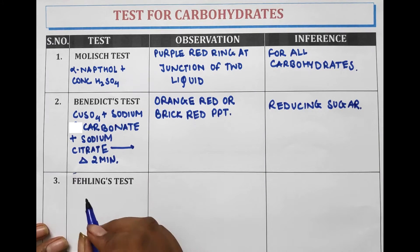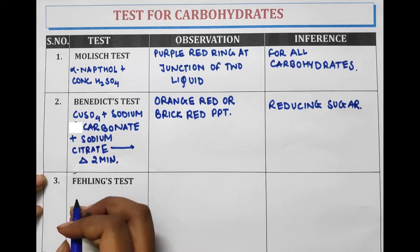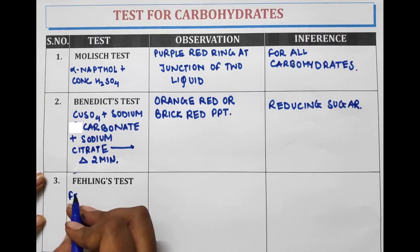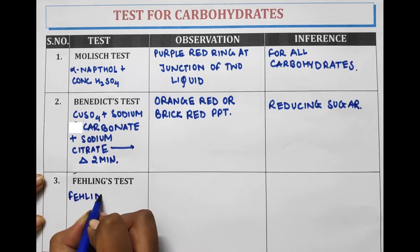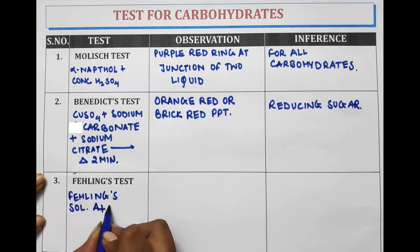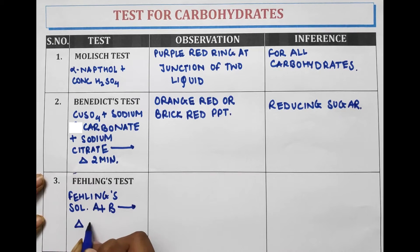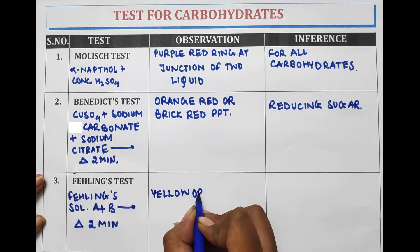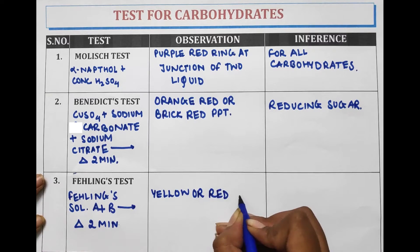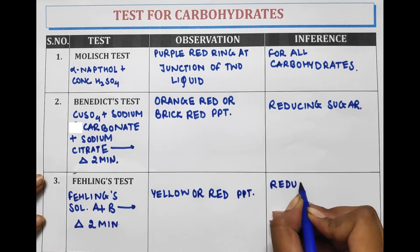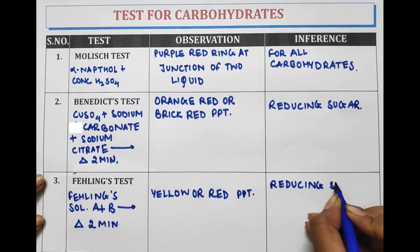The next test is the Fehling's test. Fehling's reagent A plus Fehling's reagent B is boiled for two minutes. A yellow or red precipitate is observed. It is the test for identification of reducing sugars.